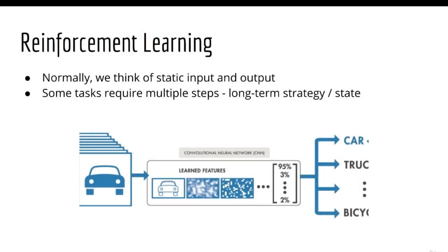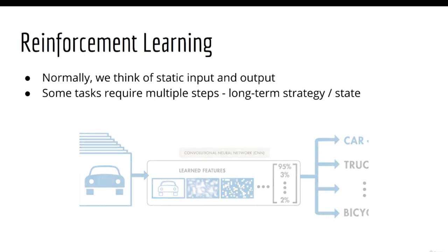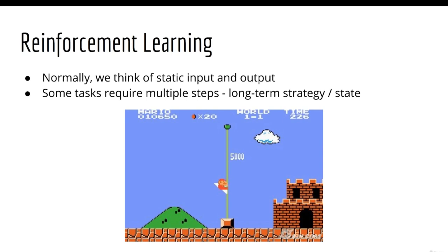Another exciting application of deep learning is reinforcement learning. Usually, deep learning is used to create models with a static input and output — for example, you put in an image and it tells you what the image is of, or you put in an email and your neural network tells you if it's spam or not. But some tasks require multiple steps, requiring a long-term strategy and keeping track of state. For example, if you are playing a game like Super Mario, you can't just look at a still image and decide what to do — you need a long-term strategy, knowing to walk forward to reach the flag, avoid or attack enemies, and have proper timing. This is what reinforcement learning is all about.